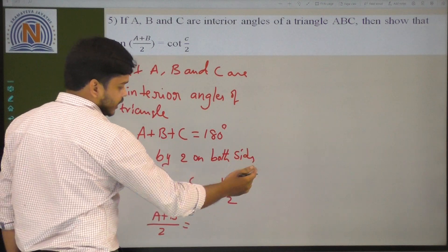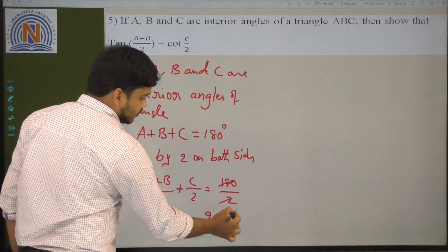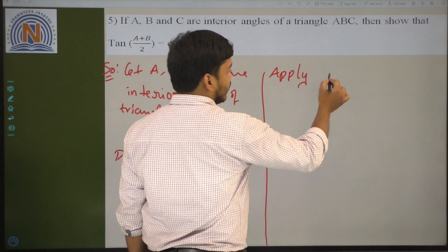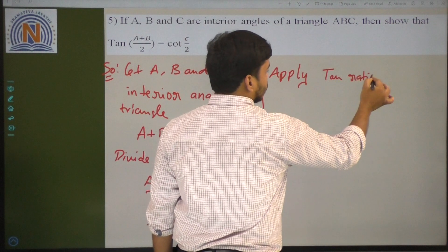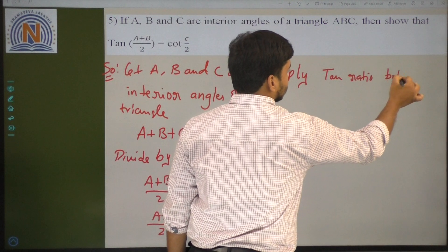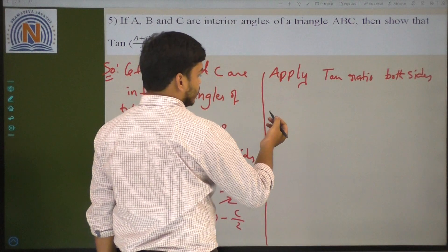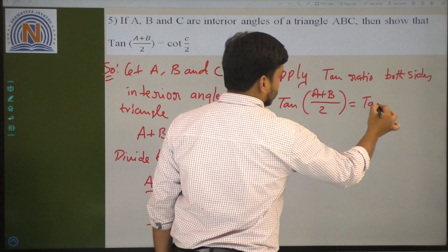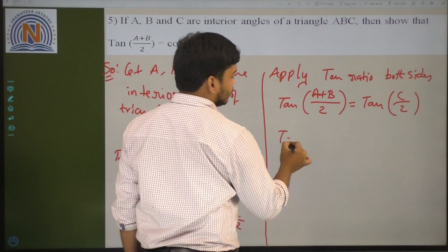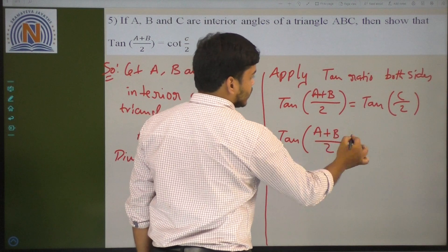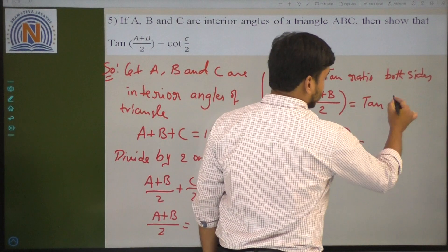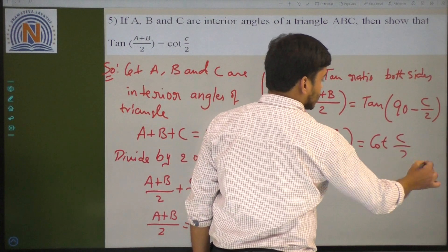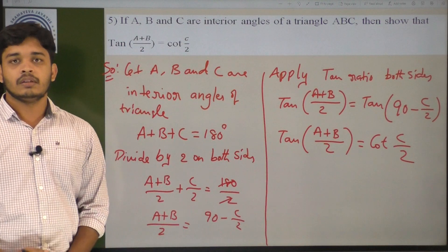Now apply tan on both sides. Tan((A+B)/2) equals tan(90 minus C/2). Since tan(90 minus theta) equals cot theta, we get tan((A+B)/2) equals cot(C/2). Hence proved. Thank you students.